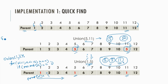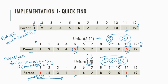The find operation is very easy. If we want to find the representative of element e, we just look at the array — for example, 12 belongs to the set represented by 12, and 11 belongs to the set represented by 5. We simply return parent[e]. This is a constant time operation, which is why this approach is called the quick find approach.